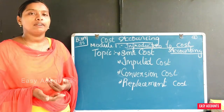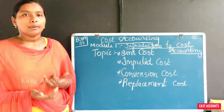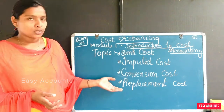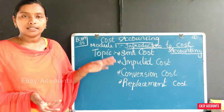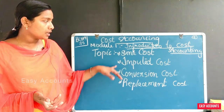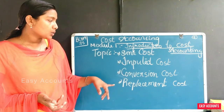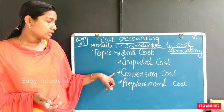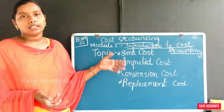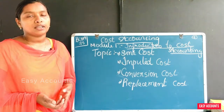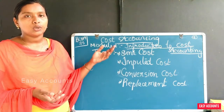We are going to talk about opportunity cost and four types of costs: sunk costs, imputed costs, conversion costs, and replacement costs. We are going to discuss each of these costs in detail.